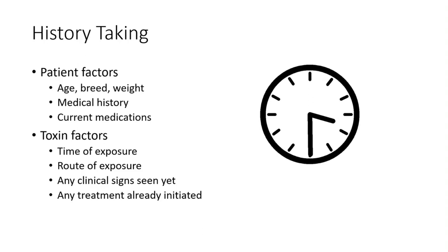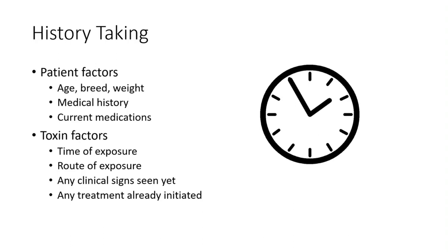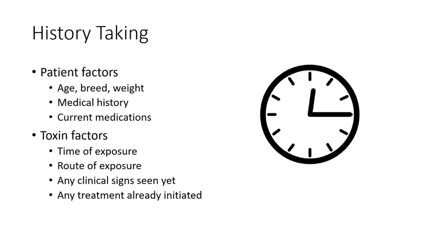In regards to history taking, there are certain things to be careful about. Obviously we ask about age, breed, and weight. In terms of past medical history, dogs that got into their owner's heart medications — we want to know if that dog has a previous history of heart disease, because that will change how we treat those patients. Also, what current medications are they on? Some possible intoxicants could have reactions with current medications, which changes how we would treat these patients.